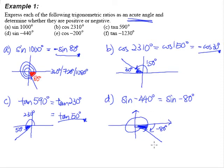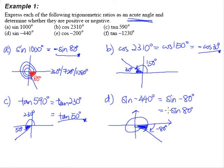The basic acute angle in this quadrant is 80 degrees. So sine negative 80 degrees is the same as sine 80 degrees. But because sine is in the fourth quadrant, the answer will be negative.